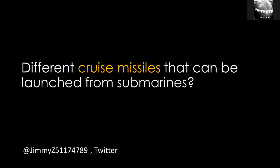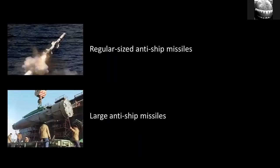Brilliant question: different types of cruise missiles that can be launched from submarines. This makes me want to write an article listing all the types and which countries have them — there are some really interesting examples. In the interest of time, I'm just going to talk about four different categories. The first I'll call regular-sized anti-ship missiles — not a term anyone else would use, but think of these as your Harpoon, Exocet, and the export versions of Kalibr which are for anti-ship use.